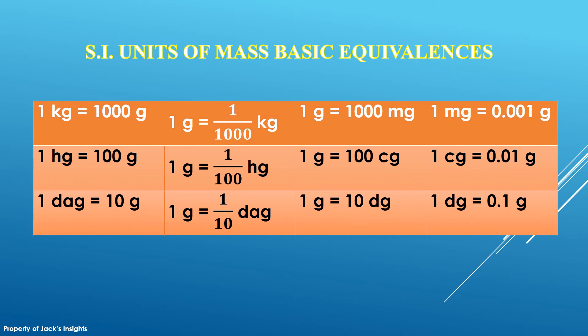I will give you sample equivalences of the units of mass. Since the distance between two adjacent units are powers of 10, then we have these equivalences. 1 kilogram is equal to 1000 grams. Oppositely, 1 gram is 1 over 1000 kilogram or 0.001 kilogram.